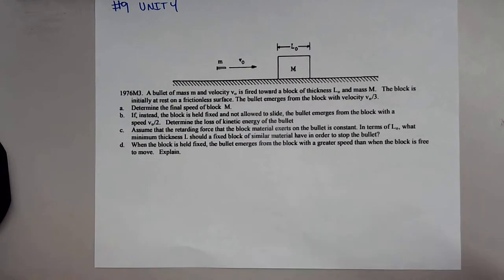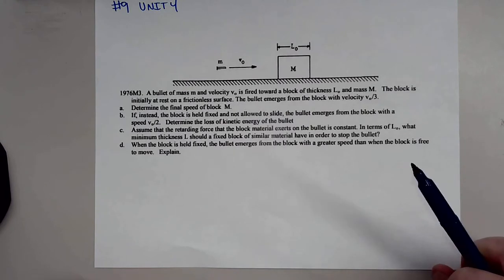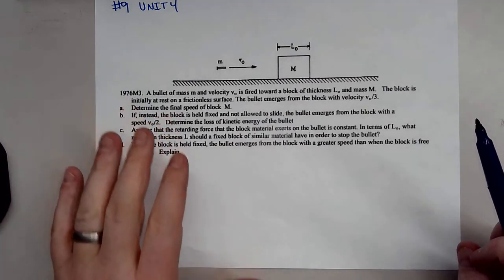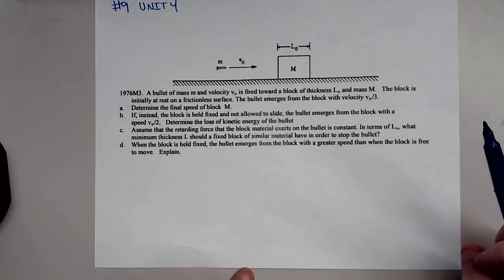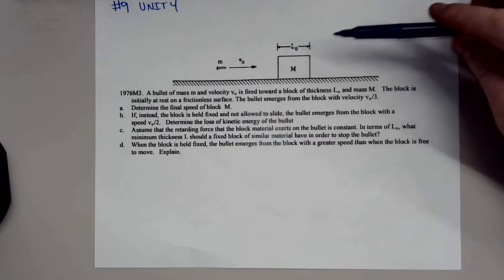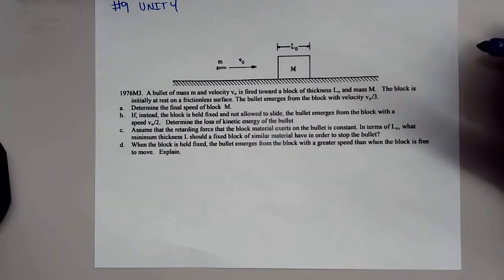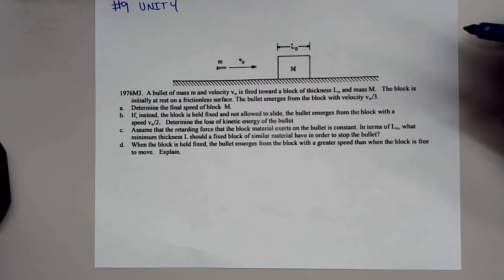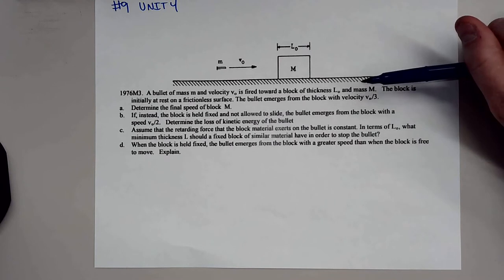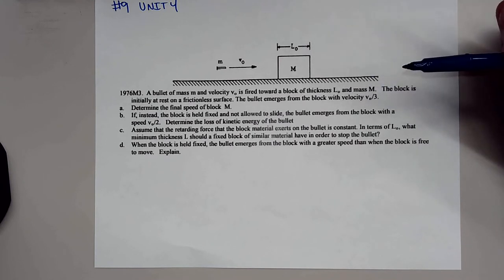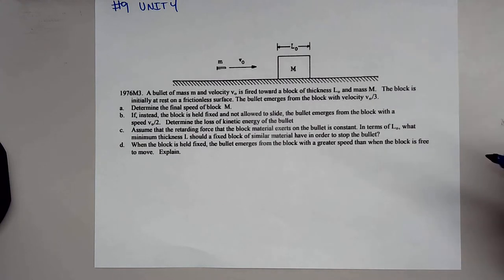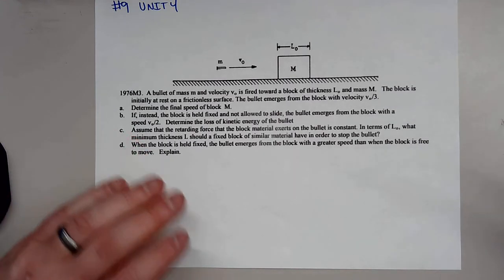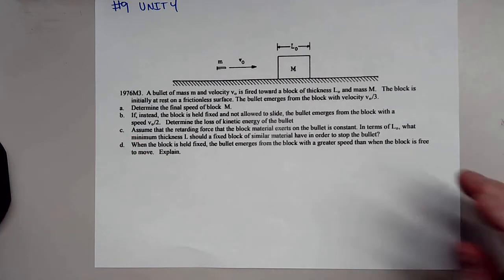Here we have a free response question. You have a bullet of mass m and a velocity of V naught fired towards a block of thickness L naught — some thickness of block and mass M. The block is initially at rest on a frictionless surface. The bullet emerges from the block with a velocity of V naught divided by three, or a third of its original velocity. Question A asks: determine the final speed of the block M.